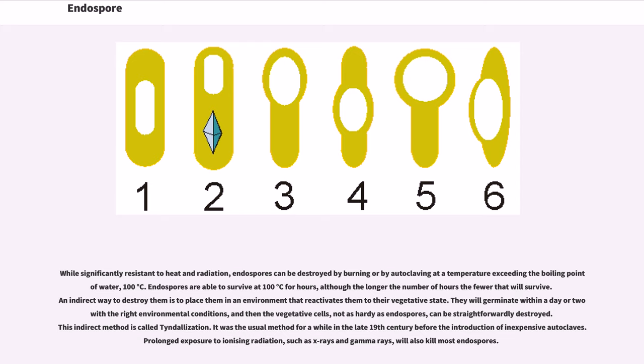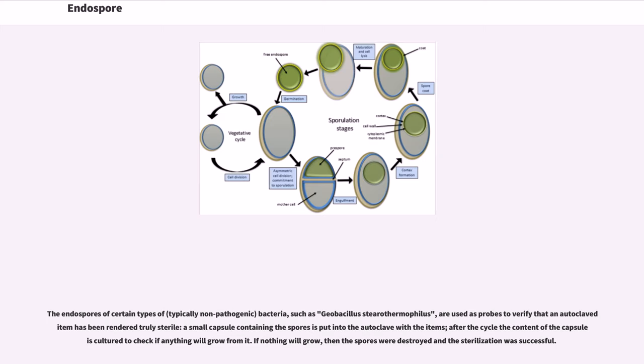It was the usual method for a while in the late 19th century before the introduction of inexpensive autoclaves. Prolonged exposure to ionizing radiation, such as X-rays and gamma rays, will also kill most endospores. The endospores of certain types of bacteria, such as Geobacillus stearothermophilus, are used as probes to verify that an autoclaved item has been rendered truly sterile. A small capsule containing the spores is put into the autoclave with the items, after the cycle the content of the capsule is cultured to check if anything will grow from it. If nothing will grow, then the spores were destroyed and the sterilization was successful.